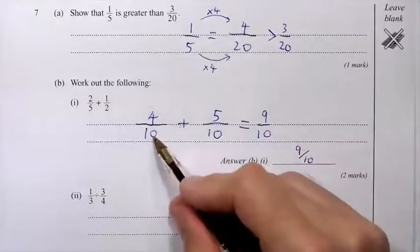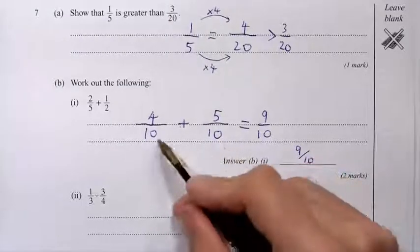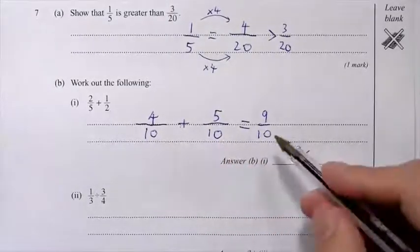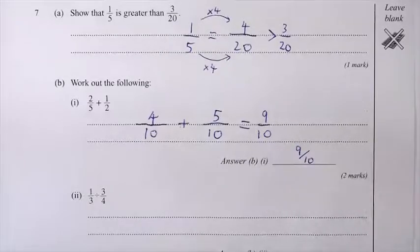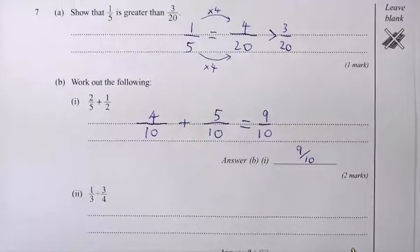So one mark for getting these two fractions over the same number. That's a common denominator. And another mark for getting the correct answer of 9 tenths. OK, on to the last little bit.